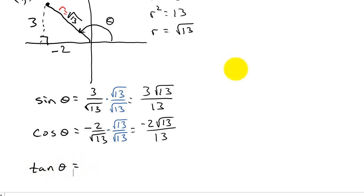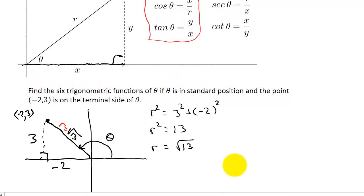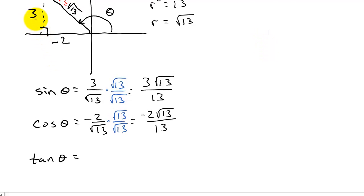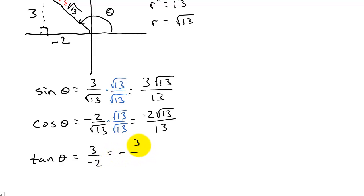Tangent theta is y over x. Our y value is 3 and our x value is -2, so tangent theta = 3 over -2, which is -3/2. I like to put the negative sign out in front, but it's fine to leave it as 3 over -2.